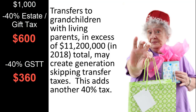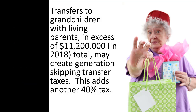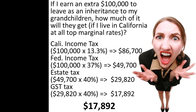As with the estate tax, because of the high exemption amounts, these generation-skipping transfer tax issues are a concern only for those taxpayers transferring substantial wealth. However, when they apply, the combined impact of these taxes can be dramatic. As an extreme example of how burdensome the various types of taxation can become, consider the case of a taxpayer who wishes to earn an additional $100,000 to leave as an inheritance to his or her grandchildren.